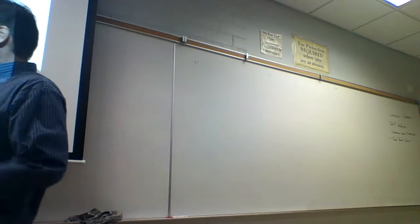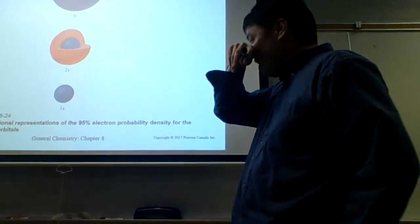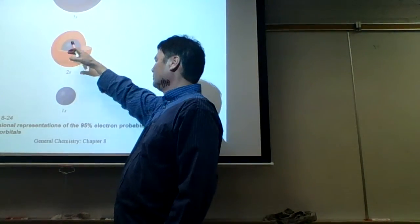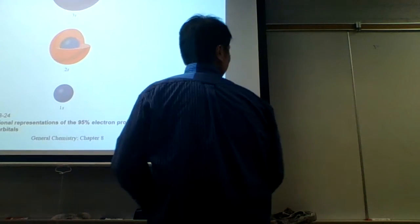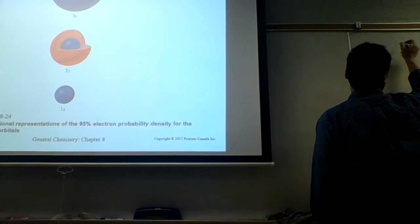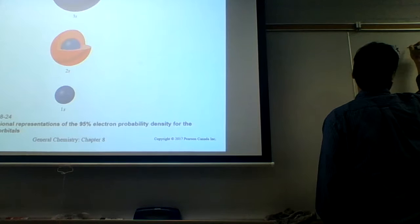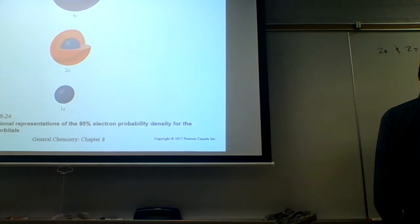Well, here are some, the 1s, the 2s, the 3s. And we see that the 2s has a node in there and other stuff. But what we're going to do is we're just going to draw the 95% probability boundary. And so if we take a look at the 2s and the 2p orbitals, what we're going to do is we're going to draw an x, y, and z coordinate system.